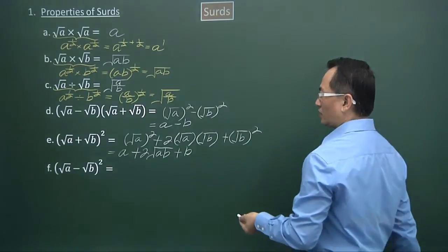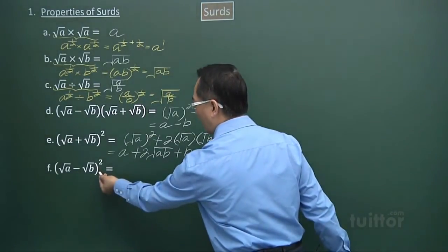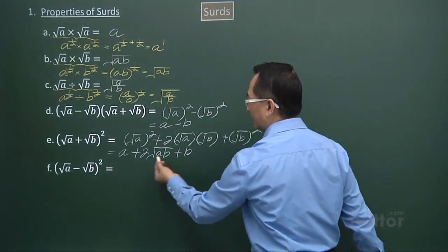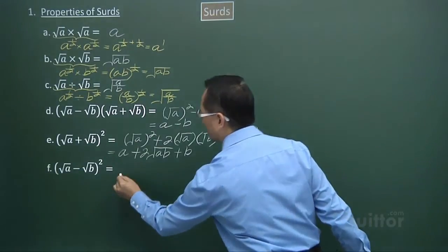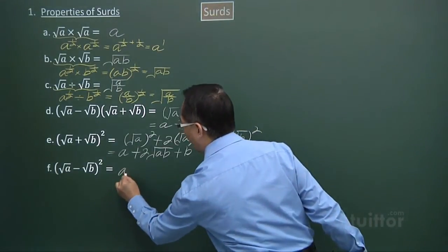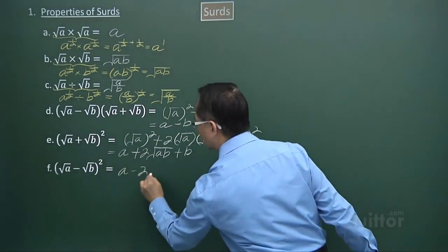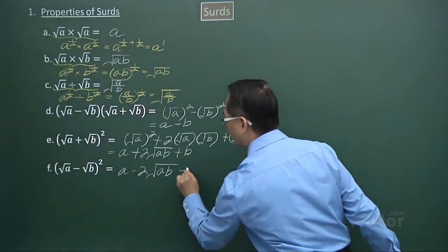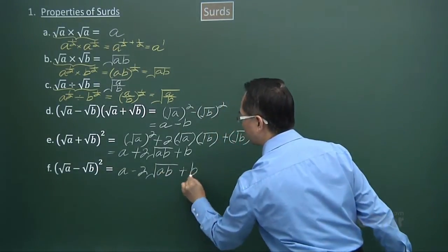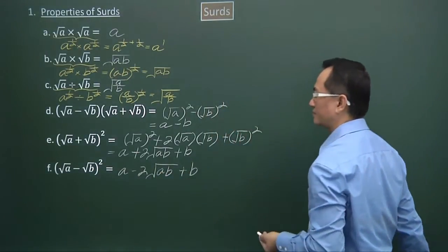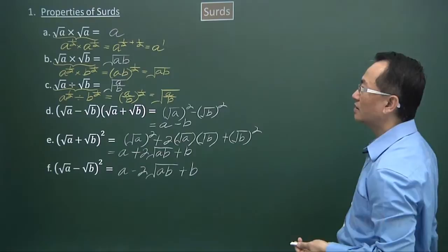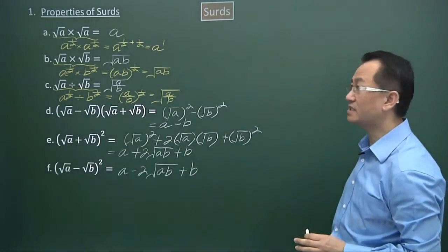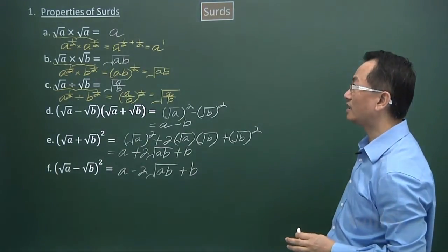For part f, the result will be similar to part e except for the sign in the middle term. So we have a minus 2 square root of ab plus b. These are some properties of surds.